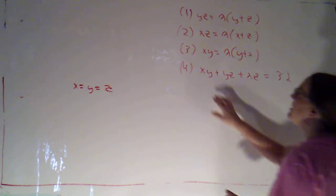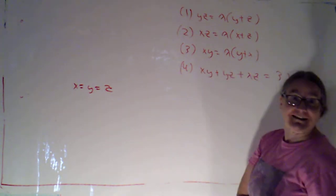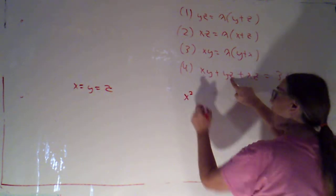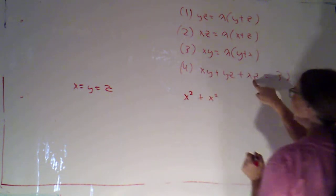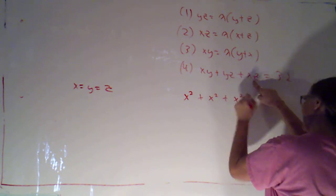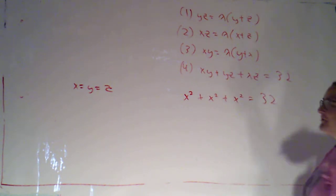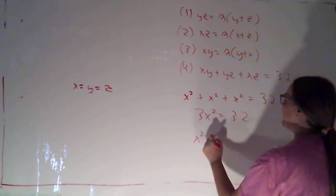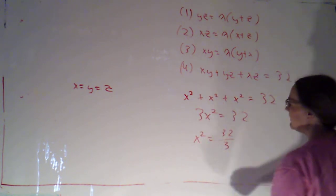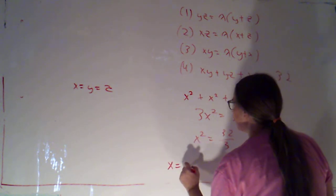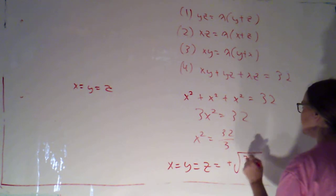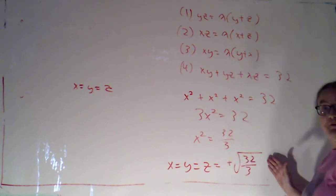I'm just going to call them all x because they're all equal to x. So xy becomes x squared, yz becomes x squared, xz becomes x squared. And that's equal to 32. So 3x squared equals 32. x squared equals 32 thirds. x equals y equals z equals the positive square root of 32 thirds.